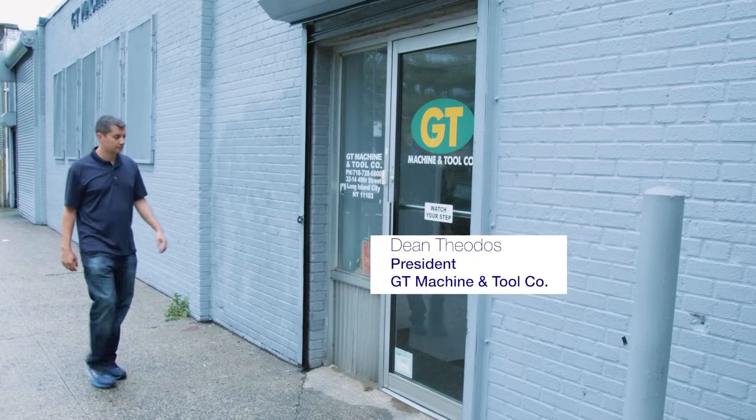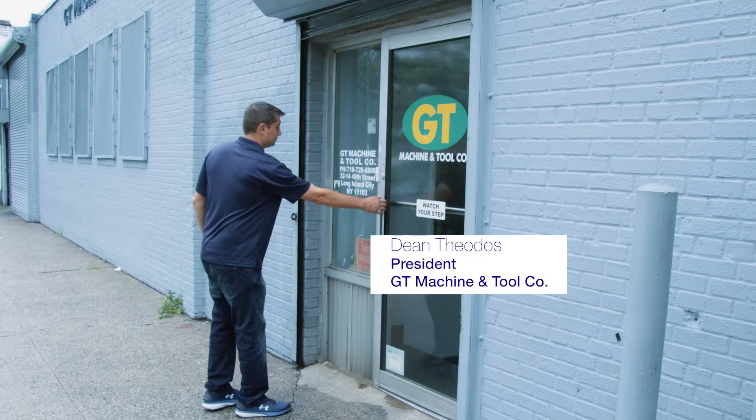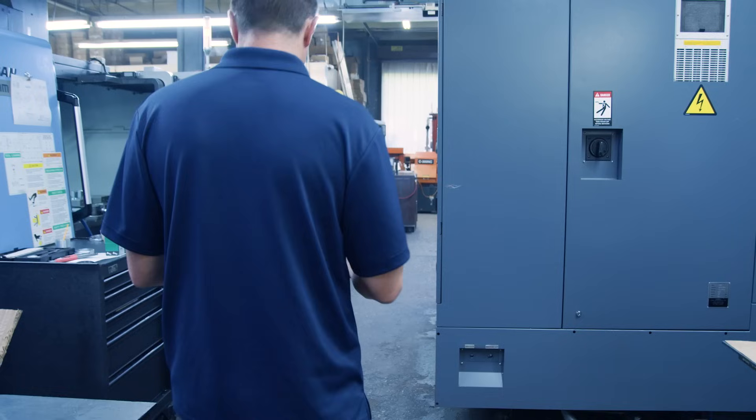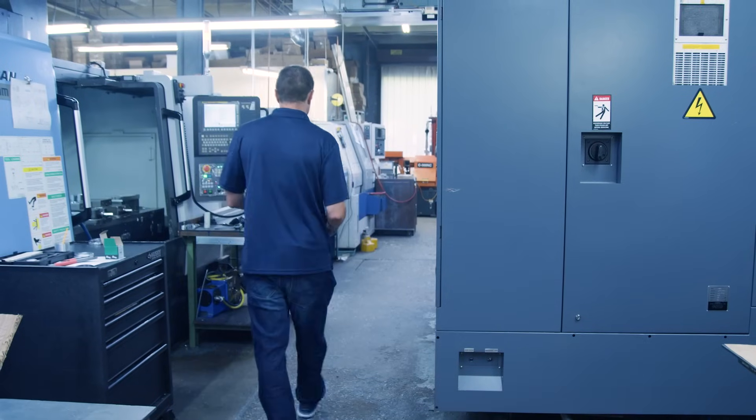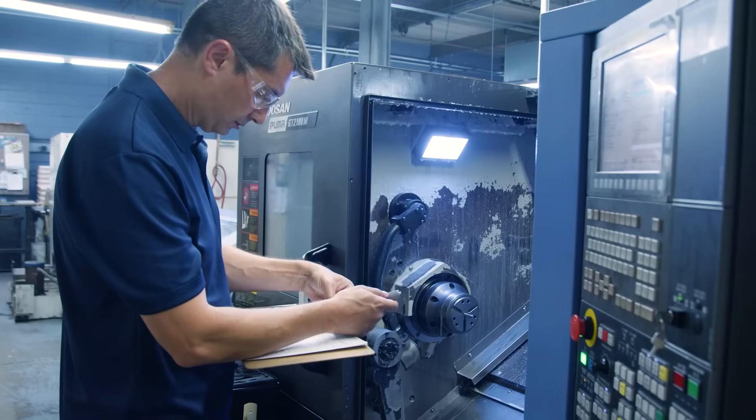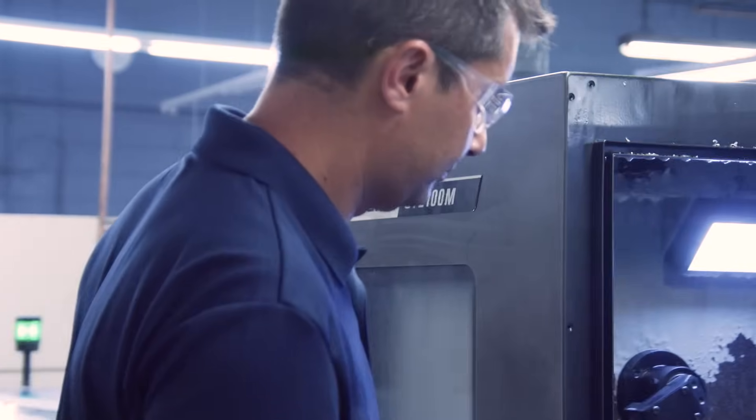My name is Dean Theoros. I'm the president of G-Team Machine and Tool. We're a third generation machine shop, and for the most part, we're making smaller parts that are going to go into a larger assembly.